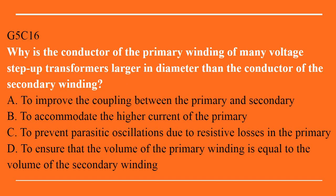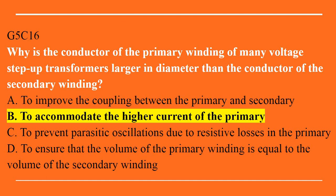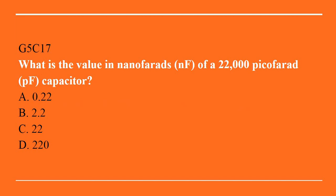G5C16: why is the conductor of the primary winding of many voltage step-up transformers larger in diameter than the conductor of the secondary winding? A. To improve the coupling between the primary and secondary. B. To accommodate the higher current of the primary. C. To prevent parasitic oscillations due to resistive losses in the primary. Or D. To ensure that the volume of the primary winding is equal to the volume of the secondary winding. Answer is B: to accommodate the higher current of the primary. G5C17: what is the value in nanofarads of a 22,000 picofarad capacitor? A. 0.22. B. 2.2. C. 22. Or D. 220. Answer is C: 22.